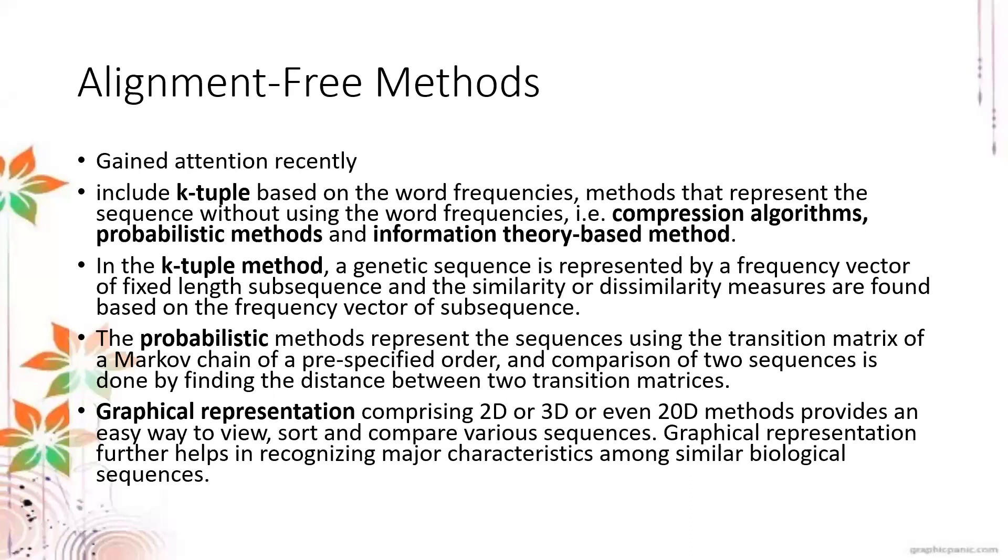How about alignment-free methods? As the name suggests, it does not rely on aligned sequences. You don't have to align the sequences first. It has recently gained attention, especially with developments in machine learning and AI. Examples include K-tuple based on word frequencies, methods that represent the sequence without using word frequencies such as compression algorithms, probabilistic methods, and information theory-based methods.